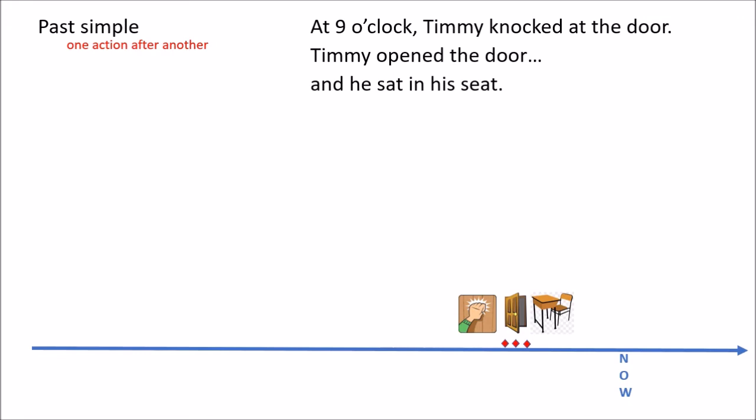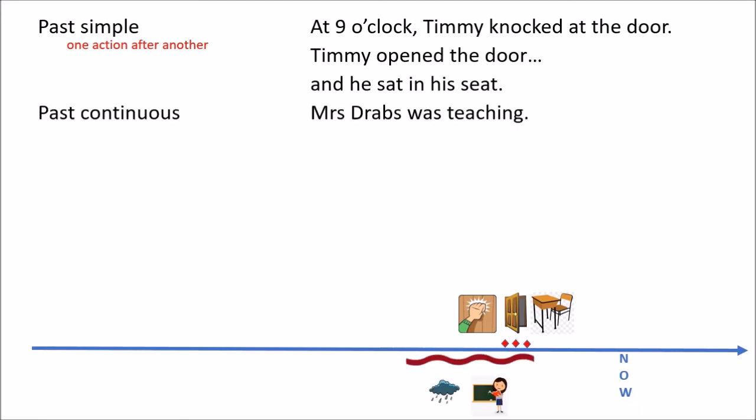Let's move on to the past continuous. The past continuous is used in this sentence: 'Mrs. Drabs was teaching.' As you can tell, this was something that was already going on in the past. So when Timmy knocked at the door, Mrs. Drabs had been teaching for a long time — something was going on while Timmy did something. In the same way you could say 'it was raining very hard outside.' Again, this was something that was going on while something else happened. So the past continuous is used for long actions that were already going on when something else happened.